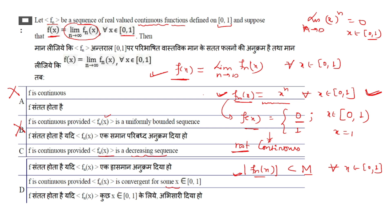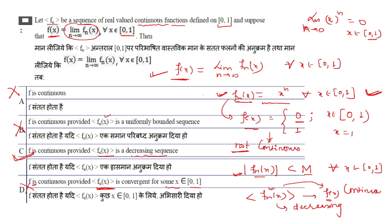Option D states F is continuous provided Fₙ(x) is convergent for some x — convergence at some points is not sufficient to guarantee F is continuous. Option C is correct: F is continuous provided Fₙ(x) is a monotonically decreasing sequence. By a standard result, a decreasing sequence of continuous functions that converges will converge to a continuous function. So the correct option is C.